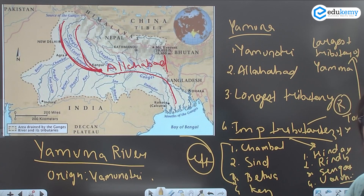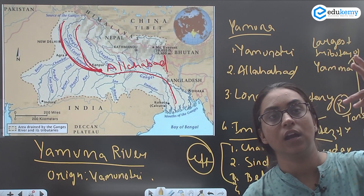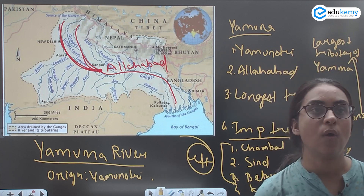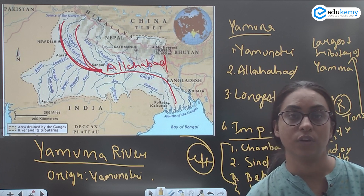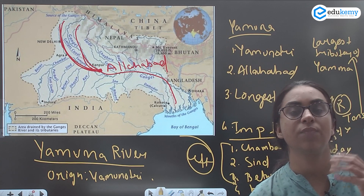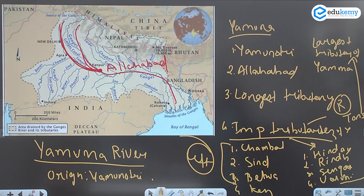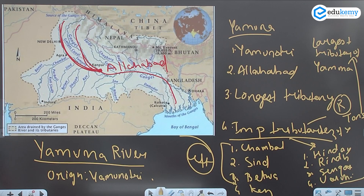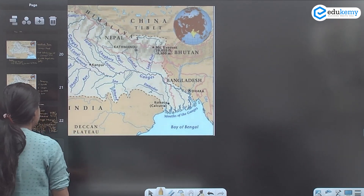We are done with Yamuna and the Ganga River system, which includes Ram Ganga, Gomti, Ghagra, Gandak, Kosi, Mahananda, and Yamuna. Now, one more important tributary of Ganga that is left is the Son River. We already know the origin of Son River and will now see other details like its important tributaries.